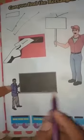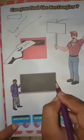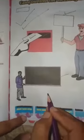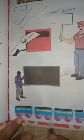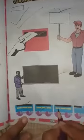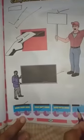The horizontal board is in this way. It is the triangle shape. Now we will tick.